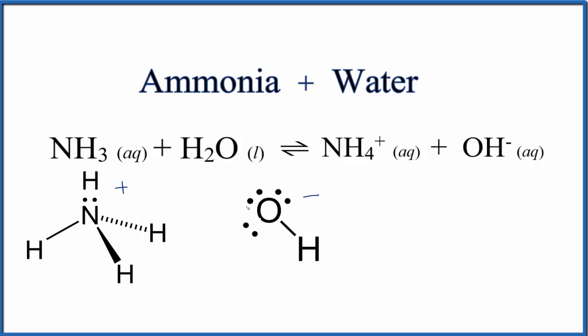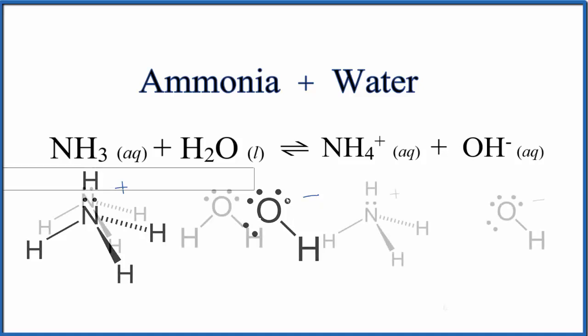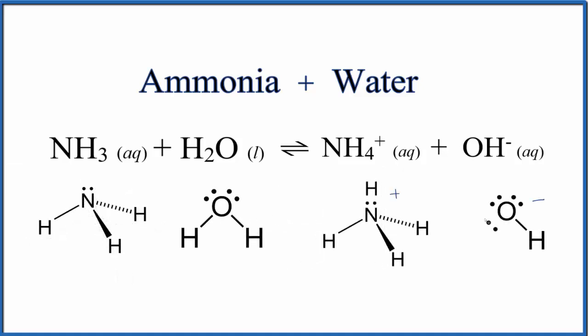We end up with our ammonium ion and our hydroxide ion. Looking at the Lewis structures, ammonia plus water gives us the ammonium ion plus the hydroxide ion. These are aqueous because they're dissolved in water. This is the equation for ammonia plus water, NH3 plus H2O.